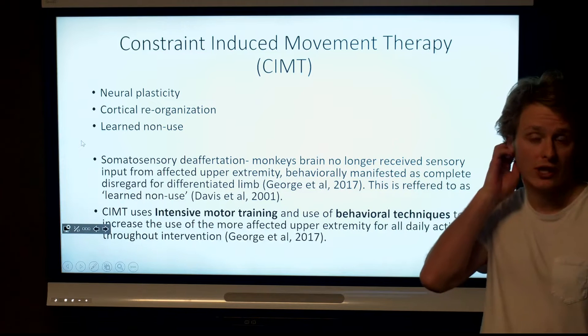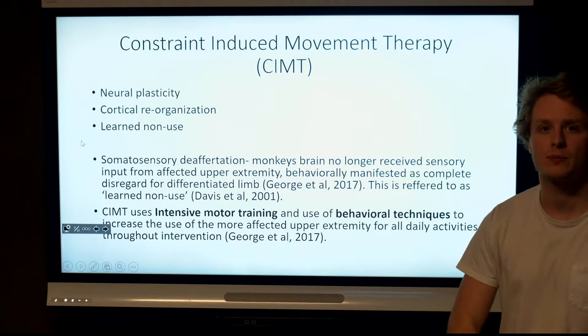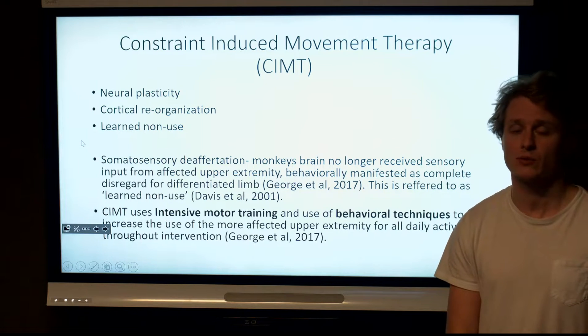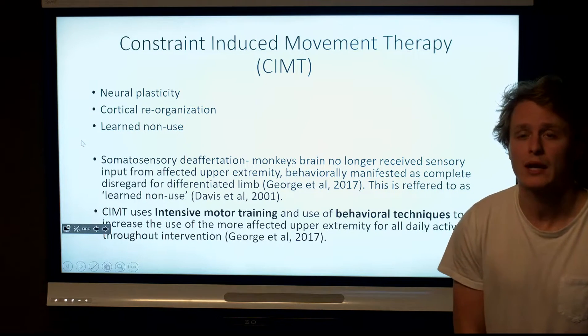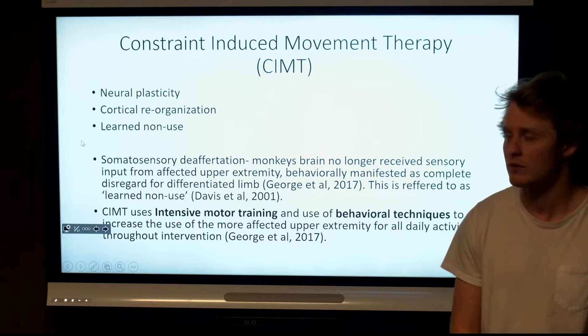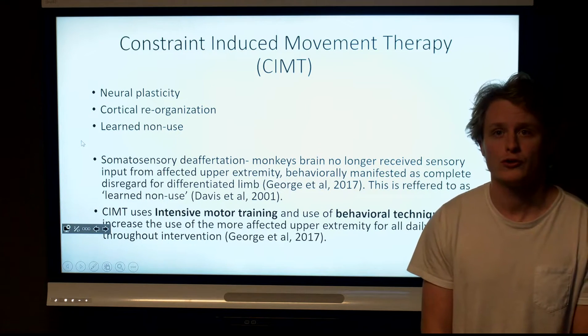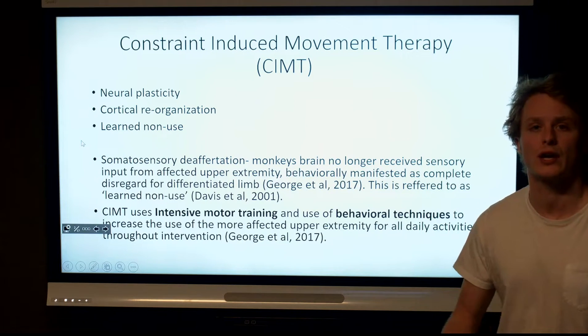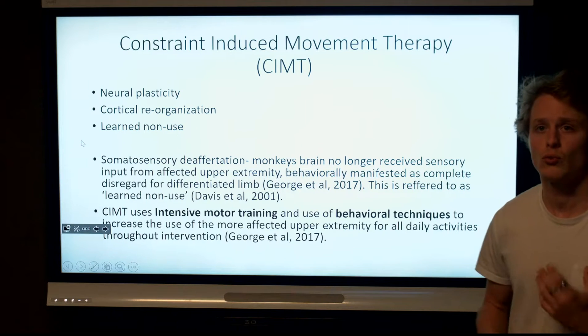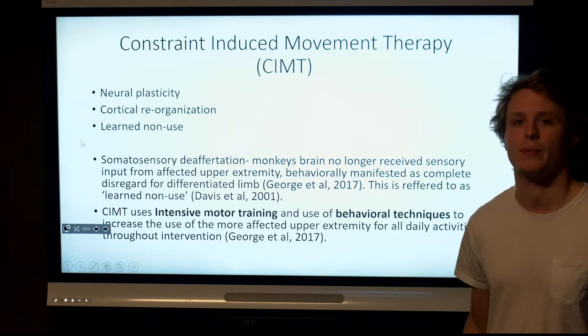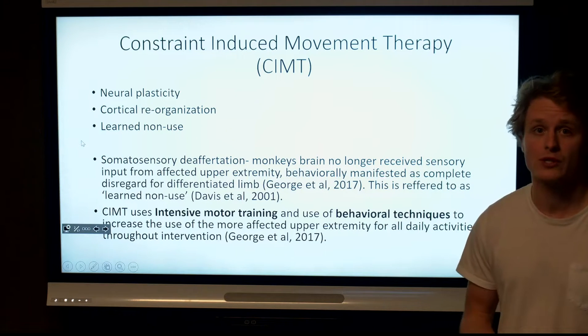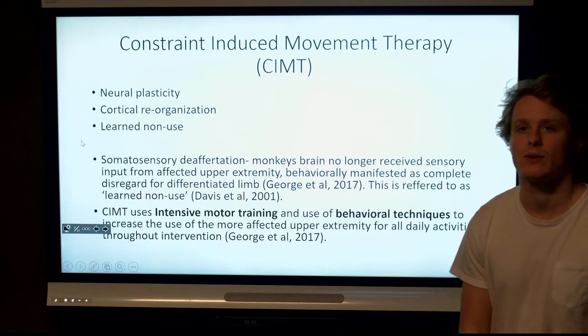This is called learned non-use, and the theory behind it comes from experiments done on animals where they found that monkeys' brains no longer receive sensory input from the affected upper extremity, and behaviorally this manifests as a complete disregard for the differentiated limb or learned non-use. This is what constraint-induced movement therapy tries to work against. Through intensive motor training and behavioral techniques, we want to retrain our patients to regain use of their affected limb through deliberate use of daily activities throughout interventions.